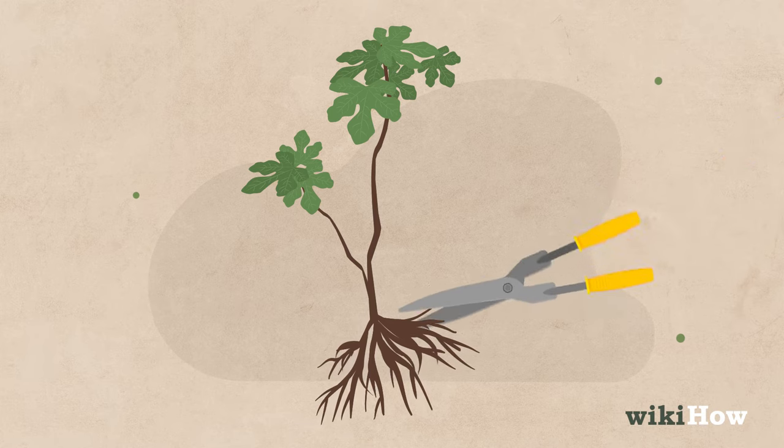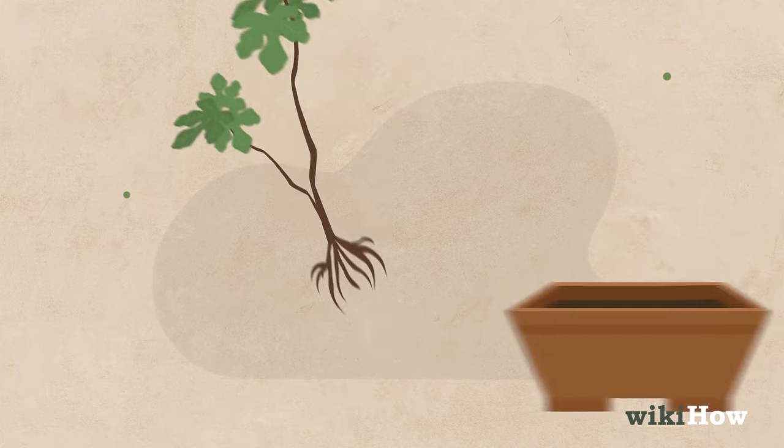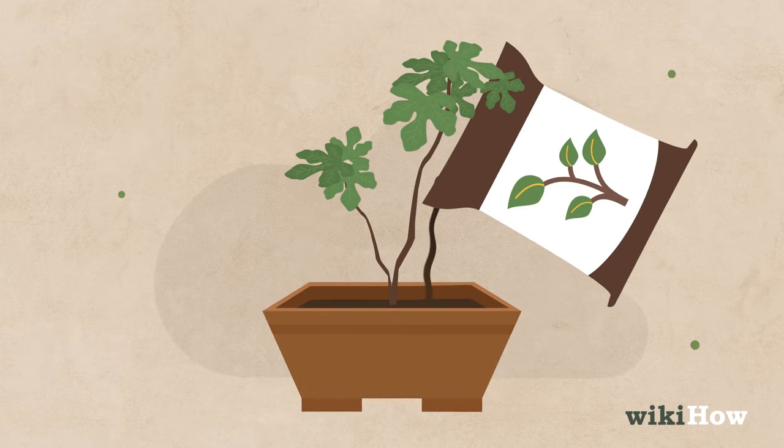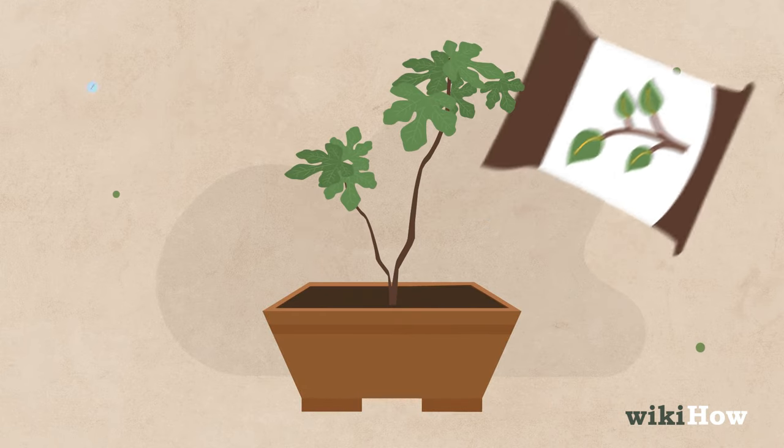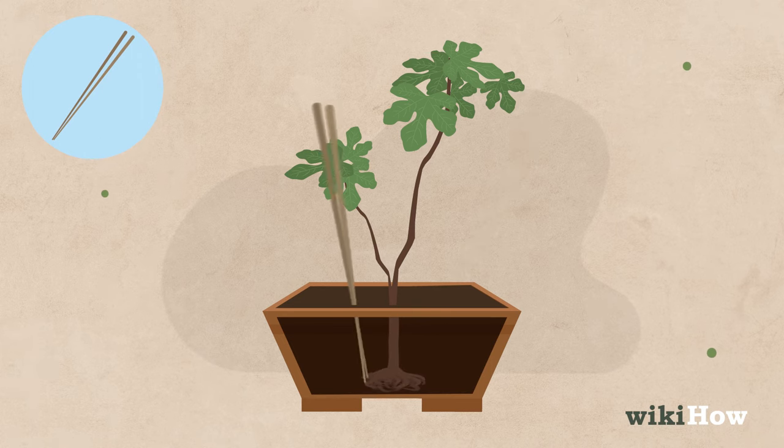Then prune the plant's roots halfway back to curb future growth. Set the plant in the container and fill in the remaining space with the soil mix, using a chopstick to push the root ball all the way to the bottom of the soil if necessary.